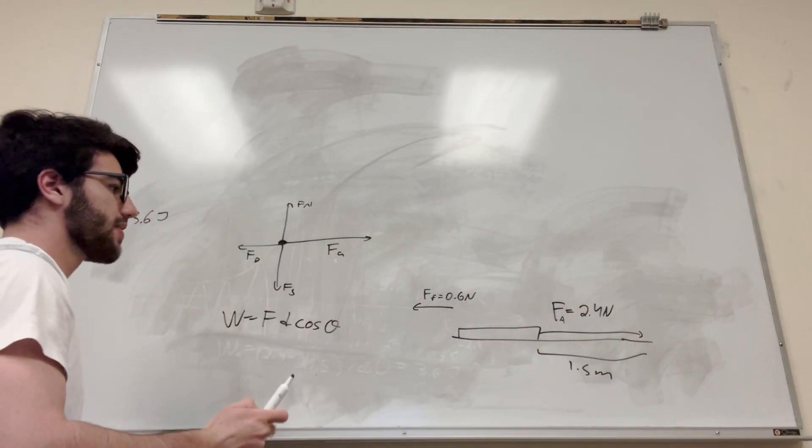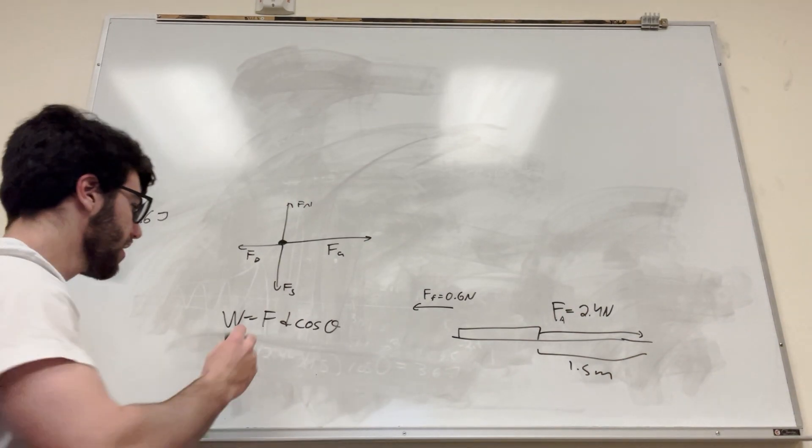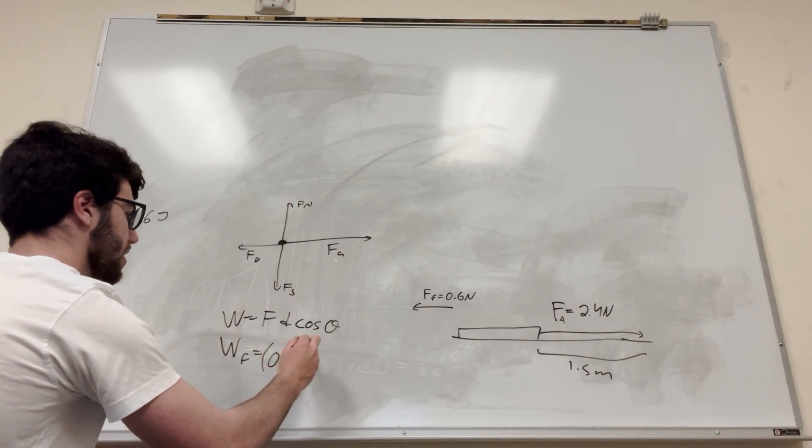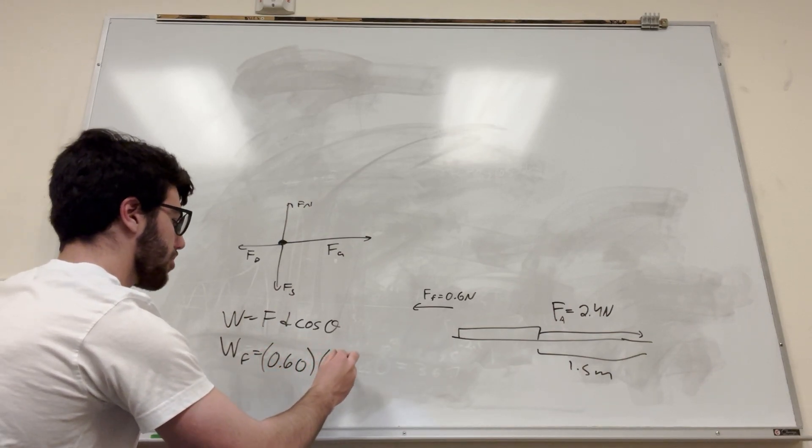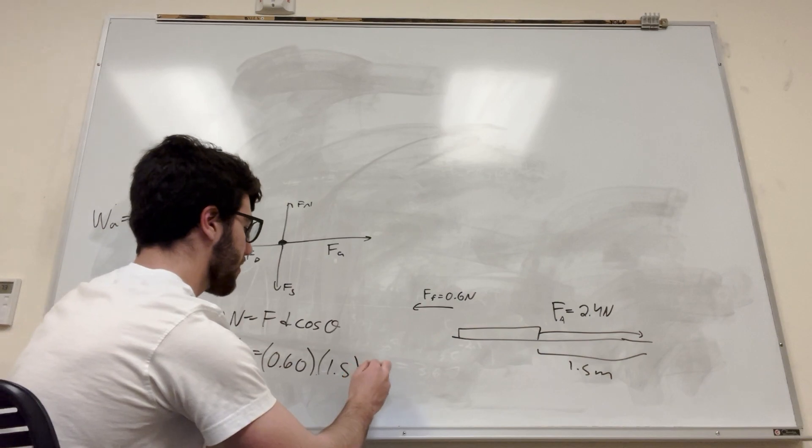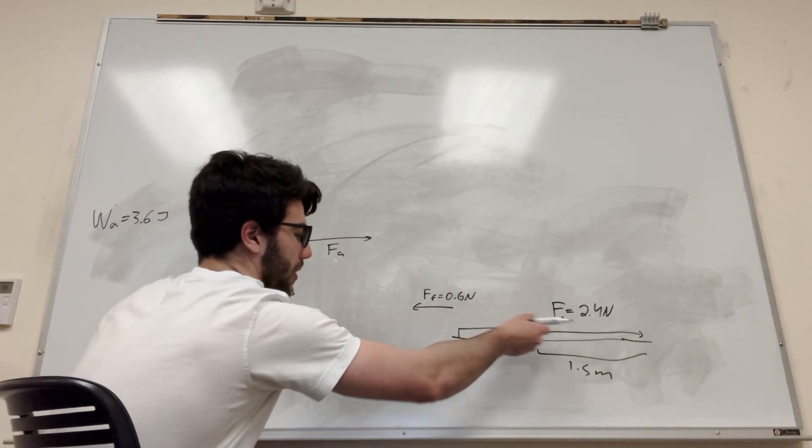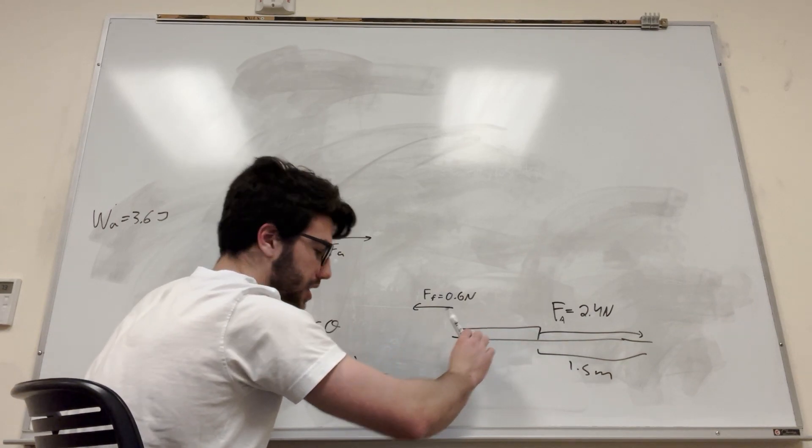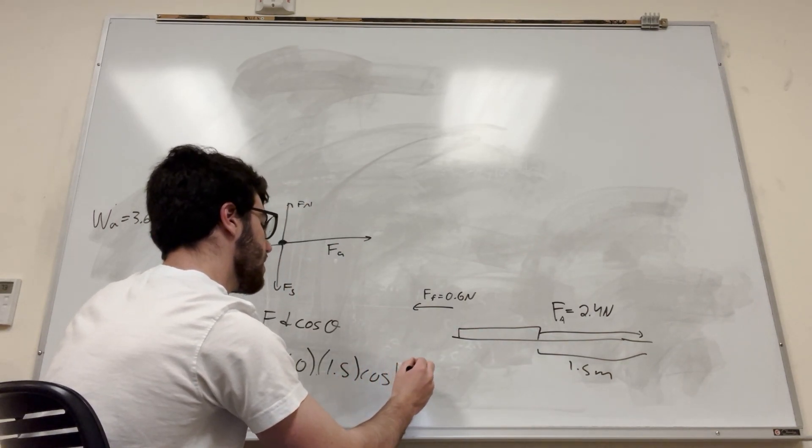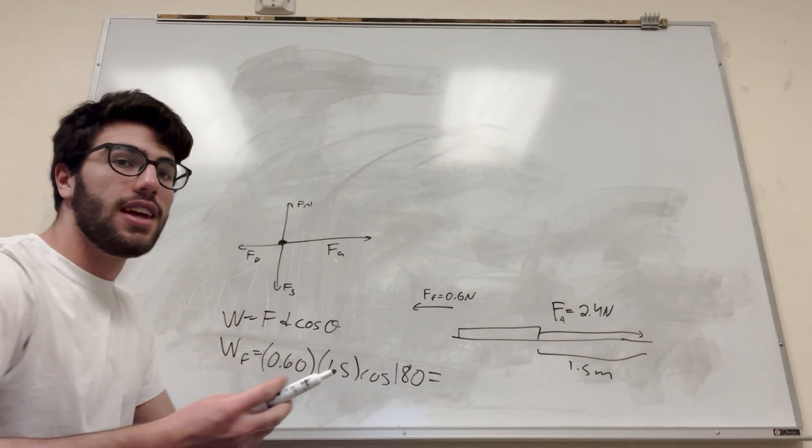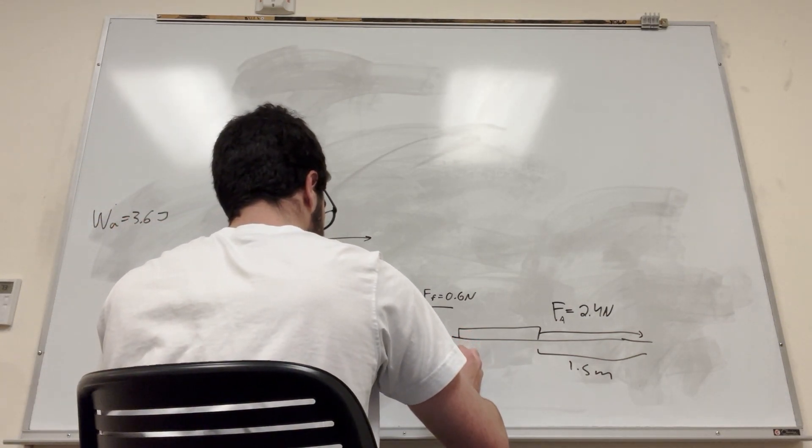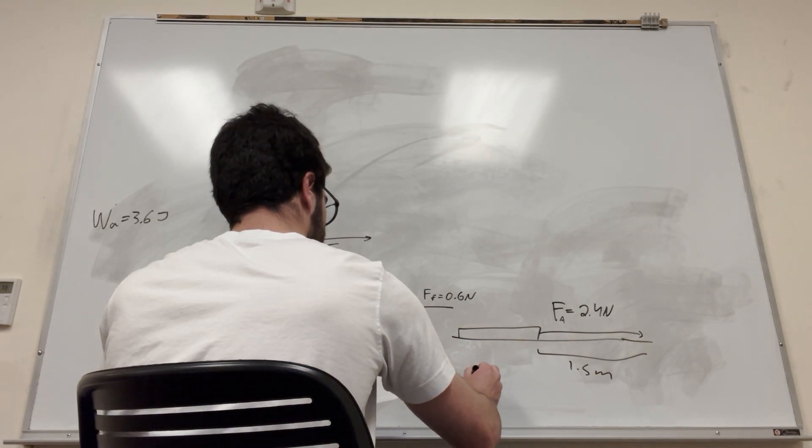Okay, next part. So how much does the friction do, right? It's the same thing. Work of the friction is equal to the force of the friction, so 0.6 newtons, times the distance, 1.5. But this time, cosine of theta, instead of going this way, it's a whole 180 degrees around, right? The friction is going the opposite direction, which is 180 degrees. And you'll notice that cosine of 180 is equal to negative 1. So what this is going to do is give us negative 0.9 joules.